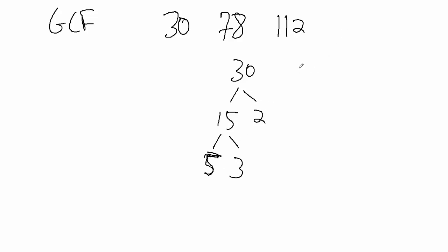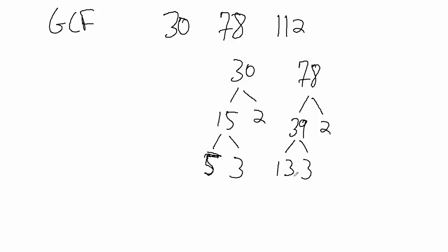Now what about 78? Well, 78 splits up into 39 times 2. 2 is a prime number, it can't be split up. 39, however, splits into 13 times 3. So 78 splits into 13 times 3 times 2, and 13, 3, and 2 are prime numbers — can't be split up anymore.